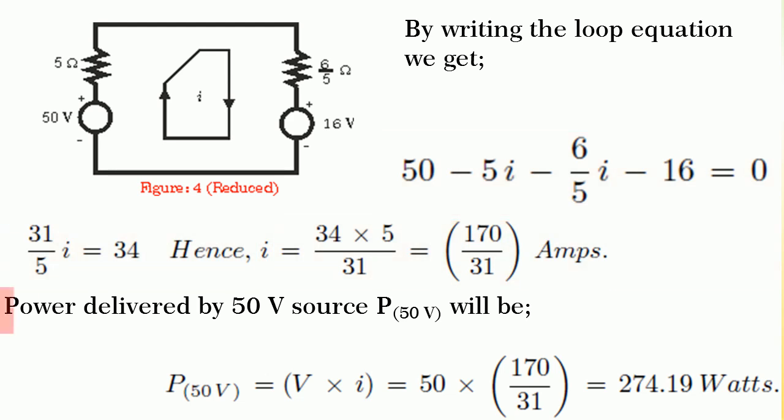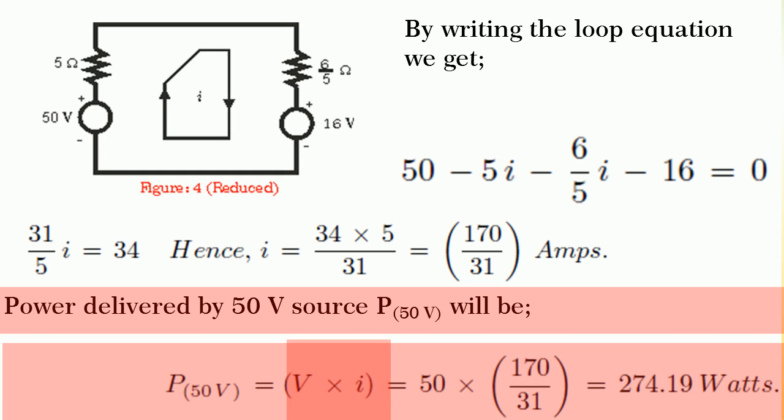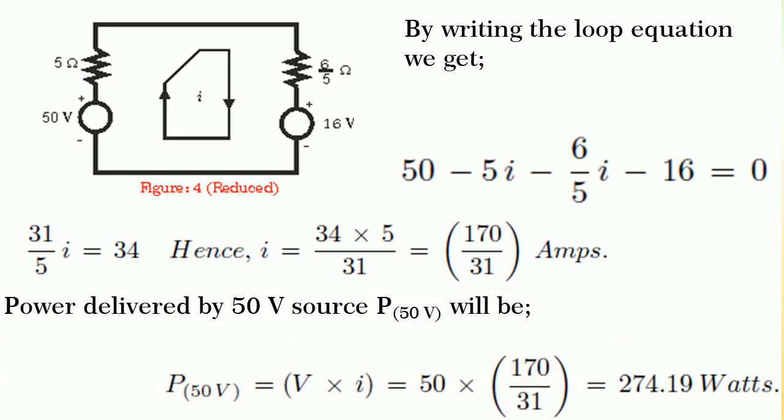Hence, power delivered by 50 volt source is equal to V into i and by substituting the values, we get 274.19 watts. Is it not simple?